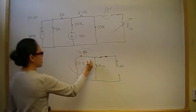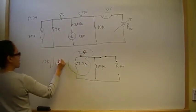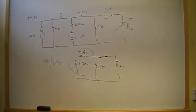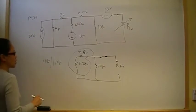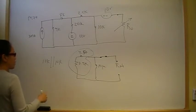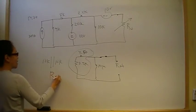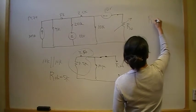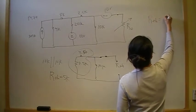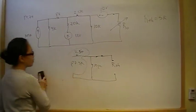Then we have 7.5k in series with the remaining 2.5k, giving 10k. That 10k is in parallel with the 10k from the other branch. When you have two equivalent resistances in parallel, the equivalent resistance is one half of that — so our R-Thevenin is 5k. That is the Thevenin resistance that will give us maximum power transfer. That's part A.